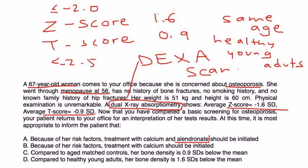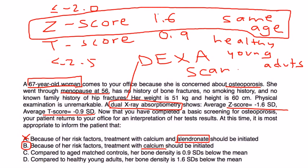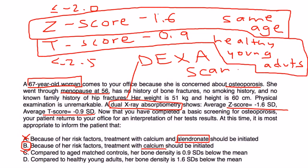She probably doesn't need alendronate at this point. Because of her age, recommending calcium is appropriate. Choices C and D are trying to confuse you by mixing up the scores — C says her bone density compared to age-matched controls is 0.9, but actually her result compared to age-matched controls is 1.6 standard deviations below the mean. Choice D swaps the values similarly. The answer is B.